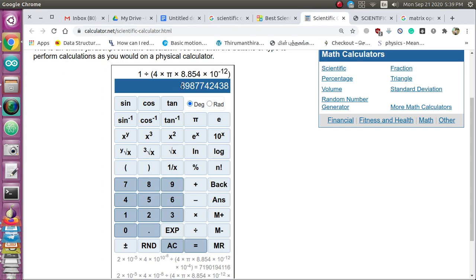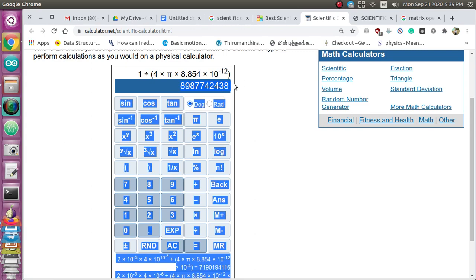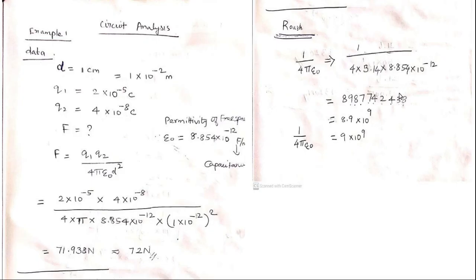The result is 8,987,742,438 — a very large number. You don't need to substitute all these digits. Instead, write this in scientific notation: 8.9×10⁹, because there are 10 digits. Then approximate 8.9 ≈ 9, giving 9×10⁹. So instead of using the full value, I directly substituted 9×10⁹, which is why I got 71.938.